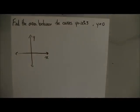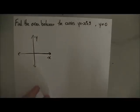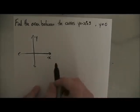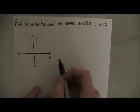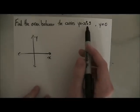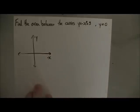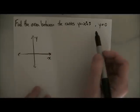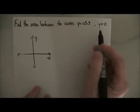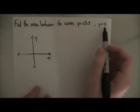Let's begin with our first question. It says find the area between the curves y equals minus x squared plus three, and the curve y equals zero.